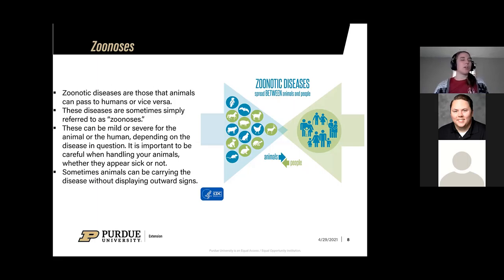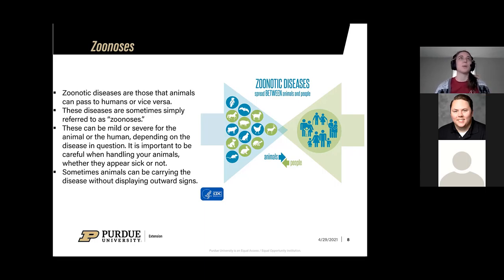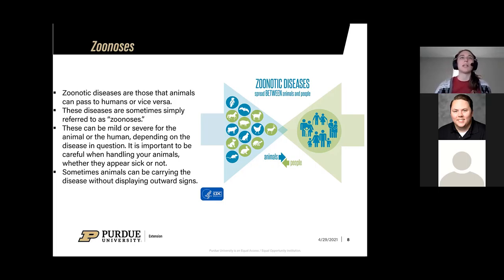I'm Cora Carter, natural resources extension educator in Bartholomew County, and I'm going to talk about zoonoses. Zoonotic diseases are those that animals can pass to humans and vice versa — humans can give diseases to animals as well. They can be mild or severe for either the animal or the human depending on the disease. It's important to think about these every time you're handling your animals, whether they appear sick or not, because some animals can carry a disease without showing any symptoms.